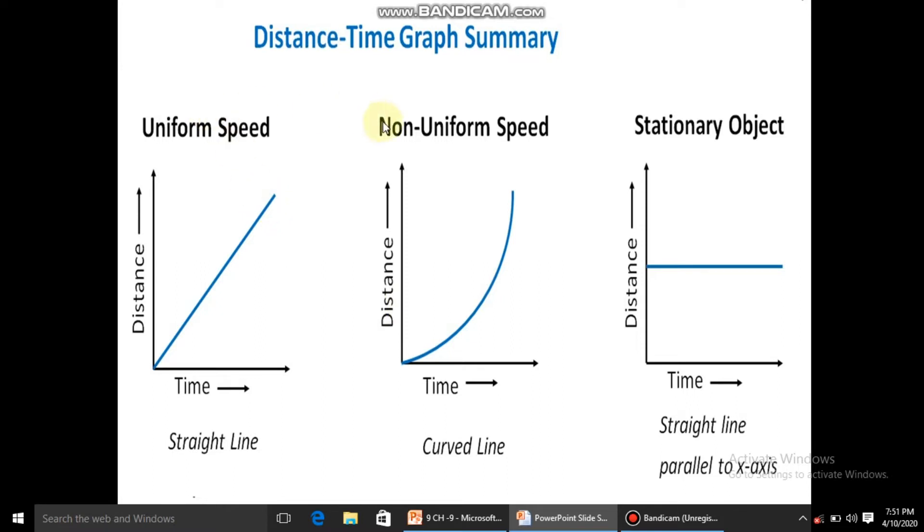Here are three conditions: number one, when an object moves with a uniform speed; second, when the object moves with a non-uniform speed; and third is the stationary object, where an object remains at its resting position but time period keeps on going.